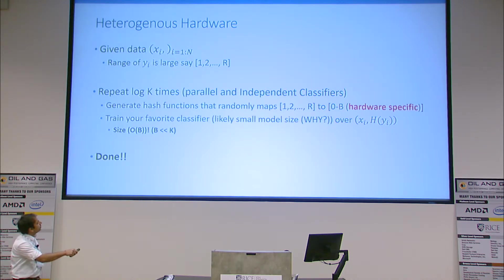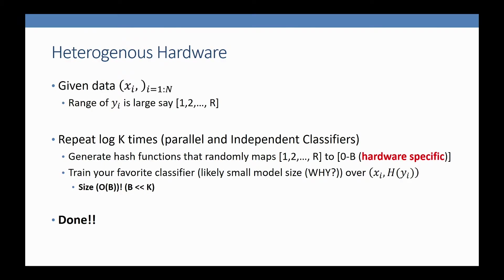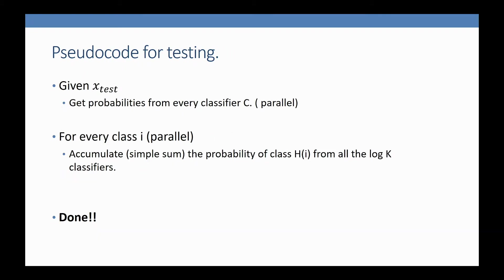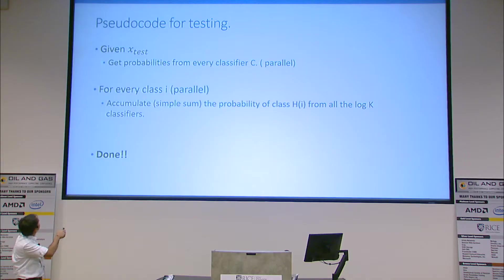If you have heterogeneous hardware and know some hardware is slower than others, you merge into even smaller classes for the weak hardware that doesn't have enough capacity. The pseudo code for testing is you accumulate the probabilities of all those meta-buckets, and you can identify the top K using any favorite compressed sensing methods.